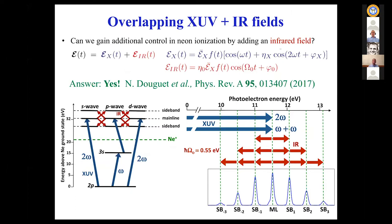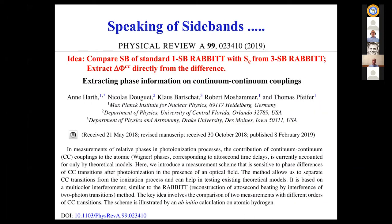I'll also talk about overlapping XUV and IR fields. We wrote a paper asking whether we can add an infrared pulse on top — another mixture — to get additional control. The answer is yes. When you add a strong IR you get multiple sidebands; with a weak IR you might get just one. Speaking of sidebands, this next interesting paper is basically Anna Hart's idea.